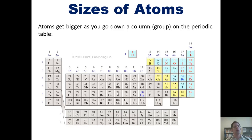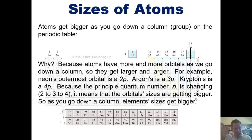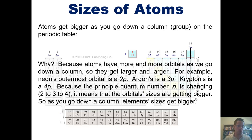As it turns out, atoms get bigger as you go down a column or group on the periodic table, because atoms going down a column have more and more orbitals and more and more electrons — hence they get larger. For example, neon's outermost orbital is a 2p, while argon's, just below it, is a 3p, and krypton's, below argon, is a 4p. Because the principal quantum number n is changing from 2 to 3 to 4, the orbital sizes are getting bigger. 4p orbitals are larger than 3ps, which are larger than 2ps. So as you go down a column, element sizes get bigger.